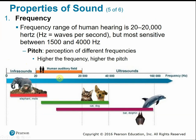It's interesting to compare our auditory fields to other species. Cats and dogs can hear much further than we can. Bats and dolphins can hear up to 160,000 hertz and communicate via echolocation, detecting these ultrasound waves.